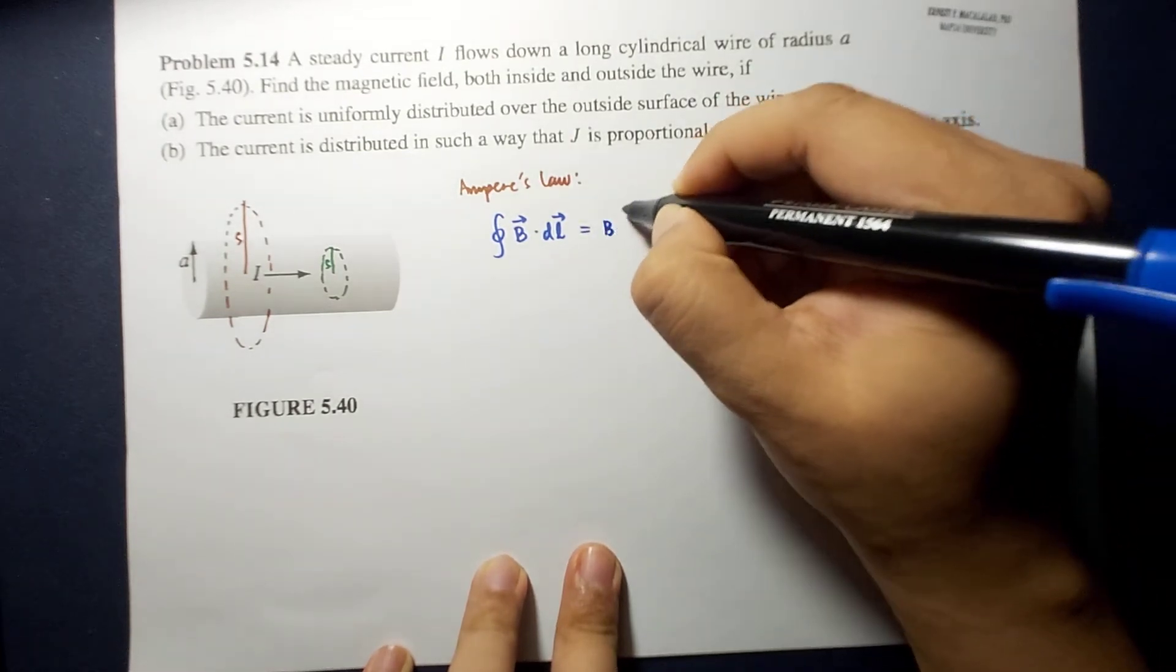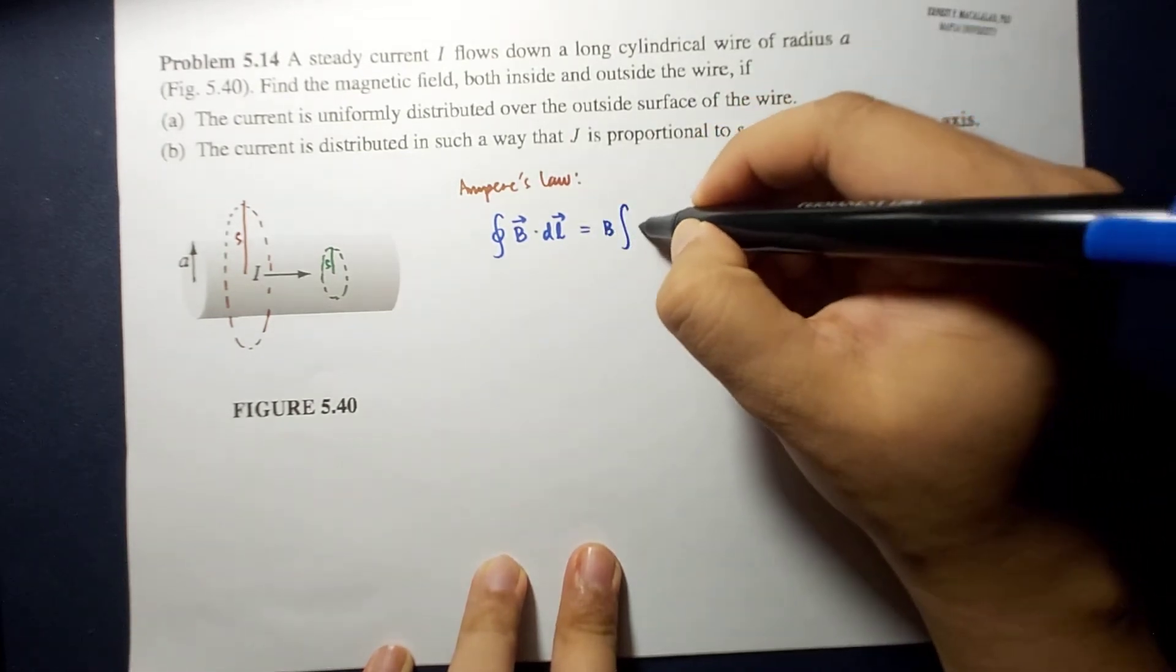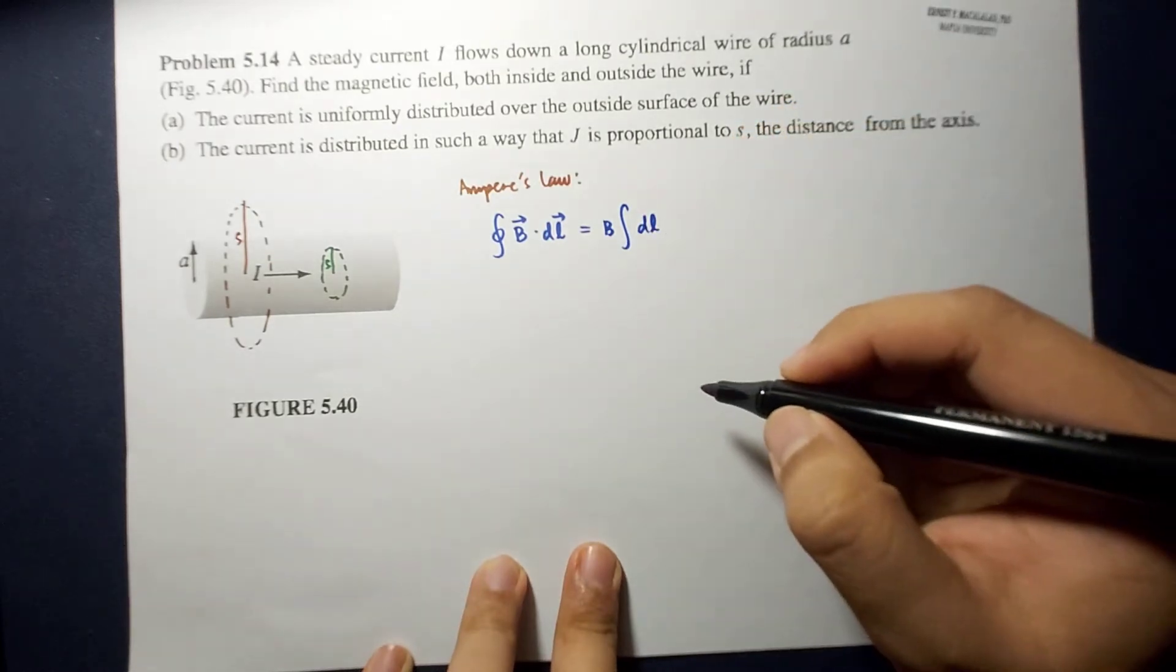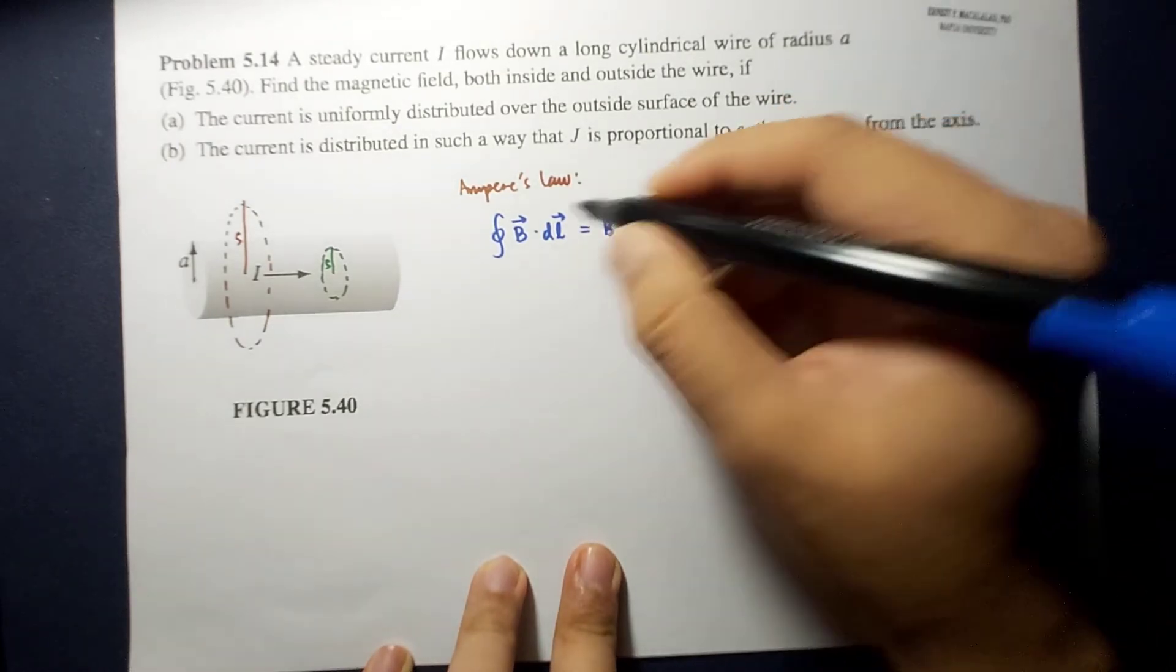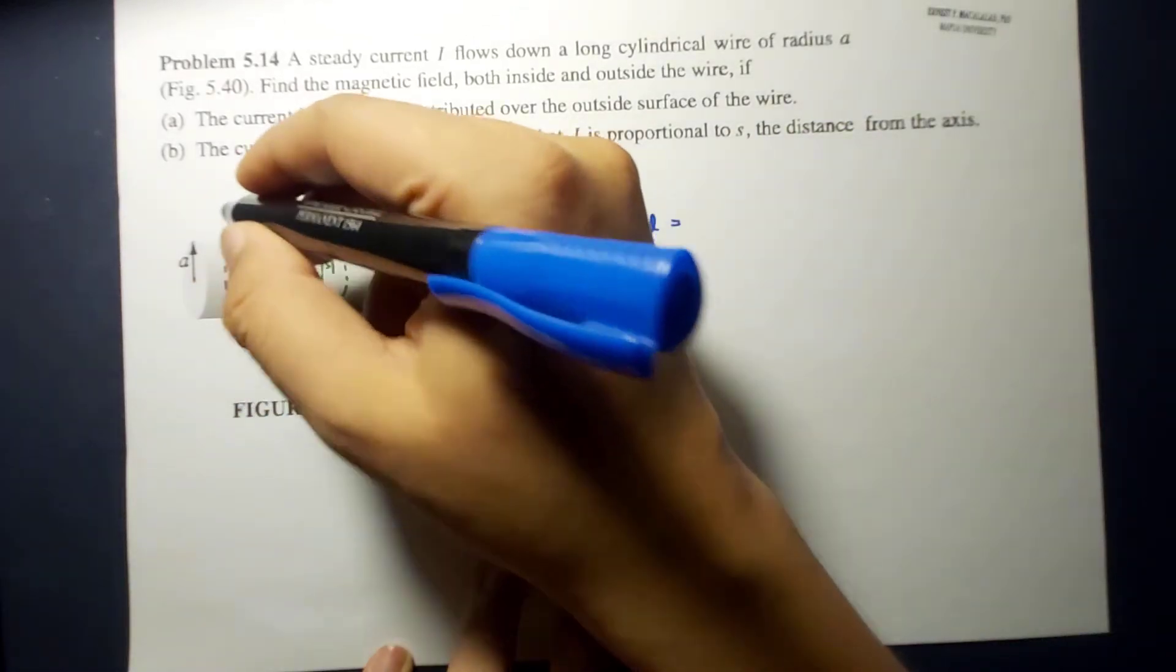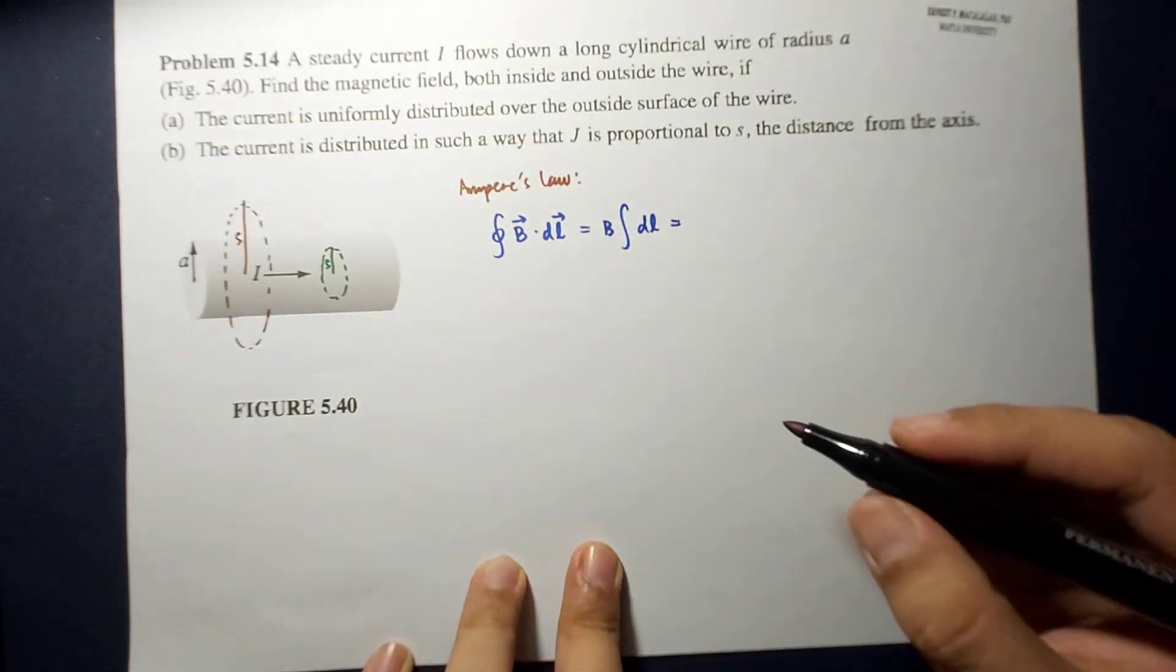This is now equal to B integral of Dn. And we expect that this integral will be just the circumference of your Amperian loop. But let's see,